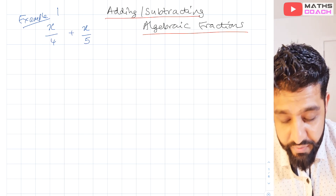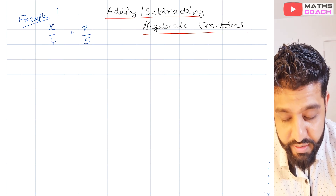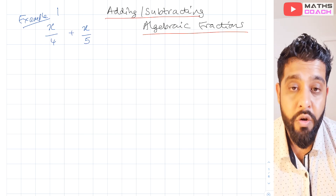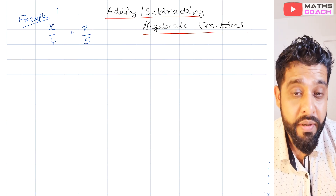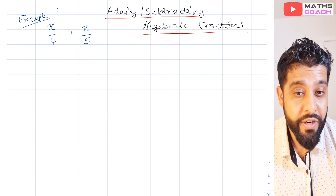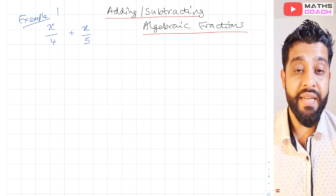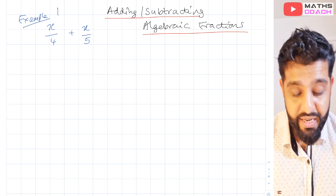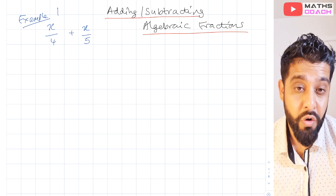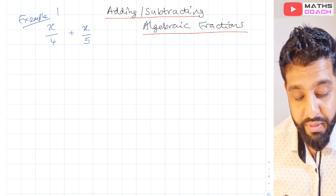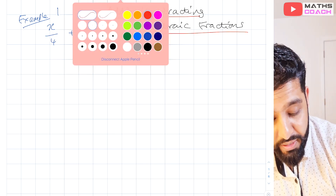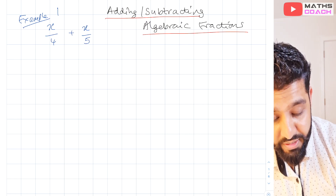We have in front of us x over 4 plus x over 5. Now you'll remember from dealing with normal numerical fractions that you have to make the denominators the same. At the moment, the first fraction has a denominator of 4 and the second one has a denominator of 5, so we will start off by making them the same.